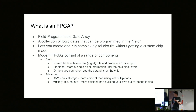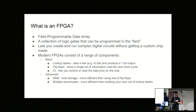Modern FPGAs consist of a range of components. Basic components include lookup tables, which take several bits and produce an output bit — you can use that to create an AND gate, OR gate, or something more complicated. There are also flip-flops, which store a single bit of information until the next clock cycle, and IO which lets you read and write the pins on the FPGA. In addition, lots of FPGAs have more advanced components like dedicated RAM — you can make RAM from flip-flops but dedicated RAM is more economical — and multiply-accumulate units, which are more efficient than building from lookup tables and flip-flops.